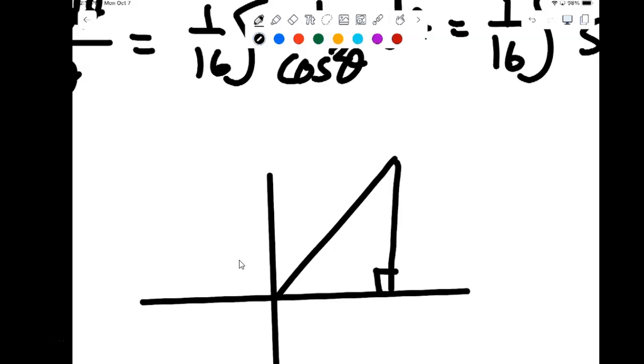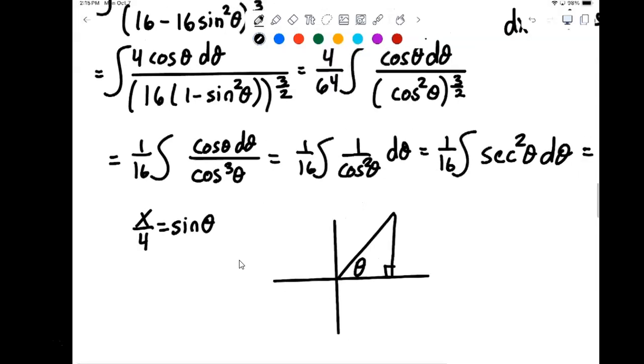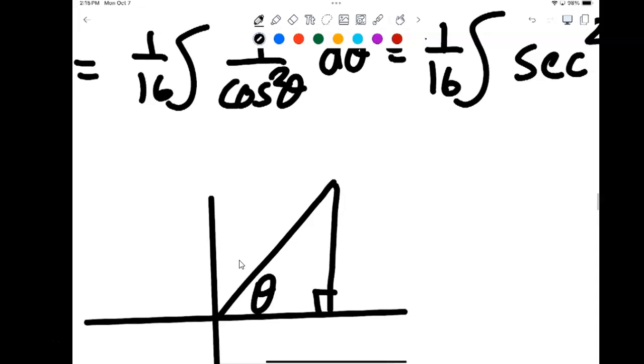Draw my reference triangle. Draw my angle theta. And we know that sine of theta, which is opposite over hypotenuse, is x over 4. So here I can go in and write x over 4.